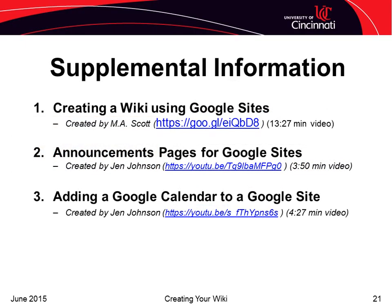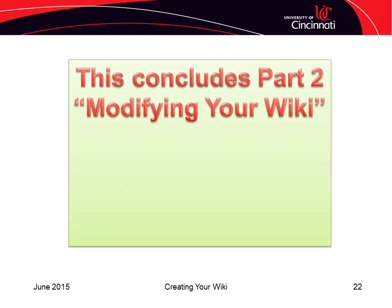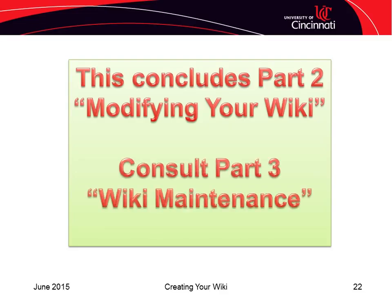To get a better understanding of how to create a wiki, consider watching the first video, Creating a Wiki Using Google Sites, developed by M.A. Scott. A couple of other features you might consider for your wiki include adding an announcements page and adding a calendar — References 2 and 3 were created by Jen Johnson and are great additions to your wiki repertoire. You have completed Part 2 of this tutorial series. Part 3 is a PDF document that details instructions on how to maintain your wiki, including linking videos to your wiki pages, deleting files, downloading files, and so on. Best wishes as you build your wiki and share your work with fellow collaborators and your coach.